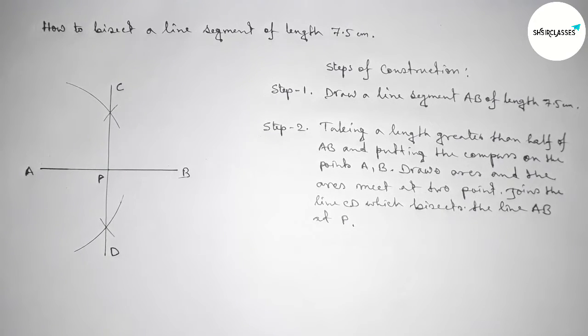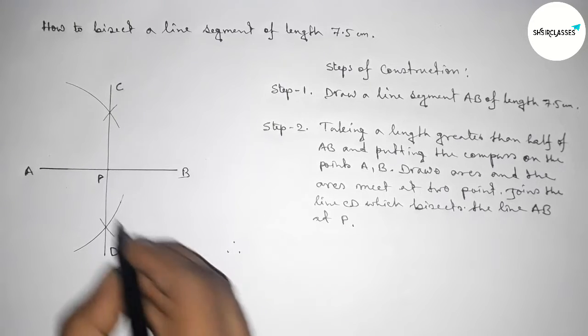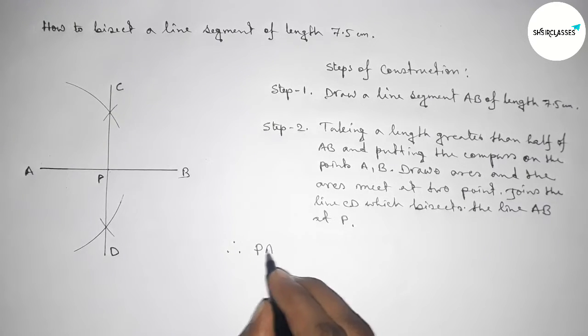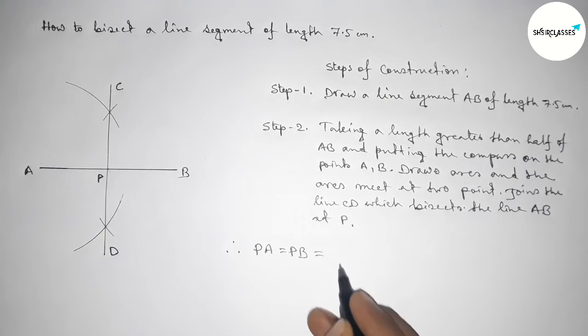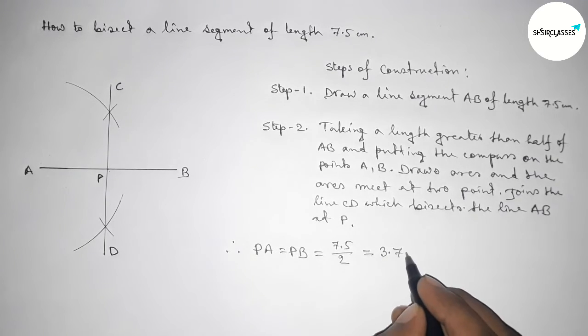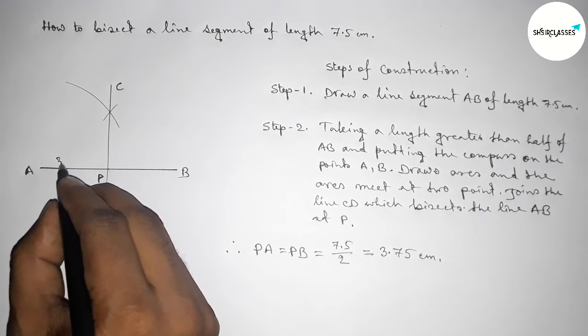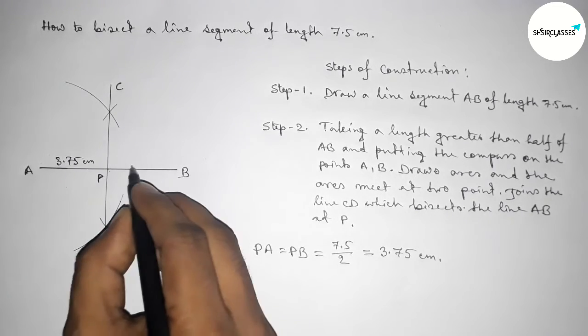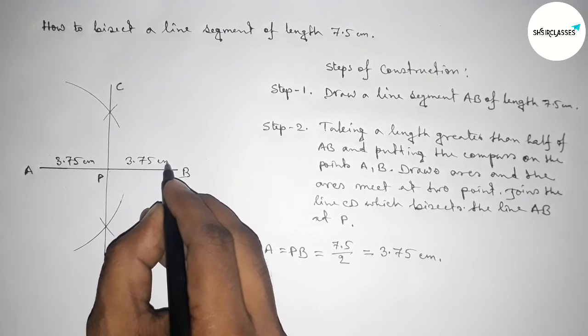Okay, so therefore the lengths PA and PB are equal. So this is 7.5 divided by 2, which is 3.75 centimeters. So this length is 3.75 and this length is 3.75 centimeters.